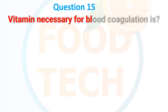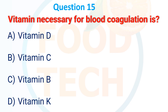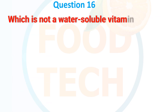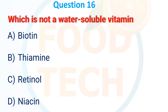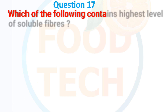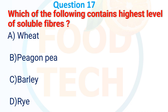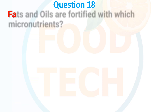Question 15: Vitamin necessary for blood coagulation is — A. Vitamin D, B. Vitamin C, C. Vitamin K, D. Vitamin B. The answer is C. Vitamin K.